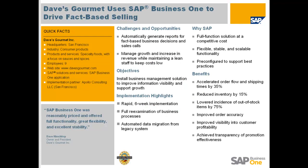I'd like to introduce you to one of our customers, Dave's Gourmet. Dave's Gourmet is a consumer product company based in San Francisco. They had particular challenges — they wanted to manage their growth and increase their revenue while keeping a lean staff to keep costs down, and they wanted to improve their information visibility to support that growth. Some highlights: they had a rapid six-week implementation, went through a full re-examination of their business processes, and had automated data migration from their existing system.